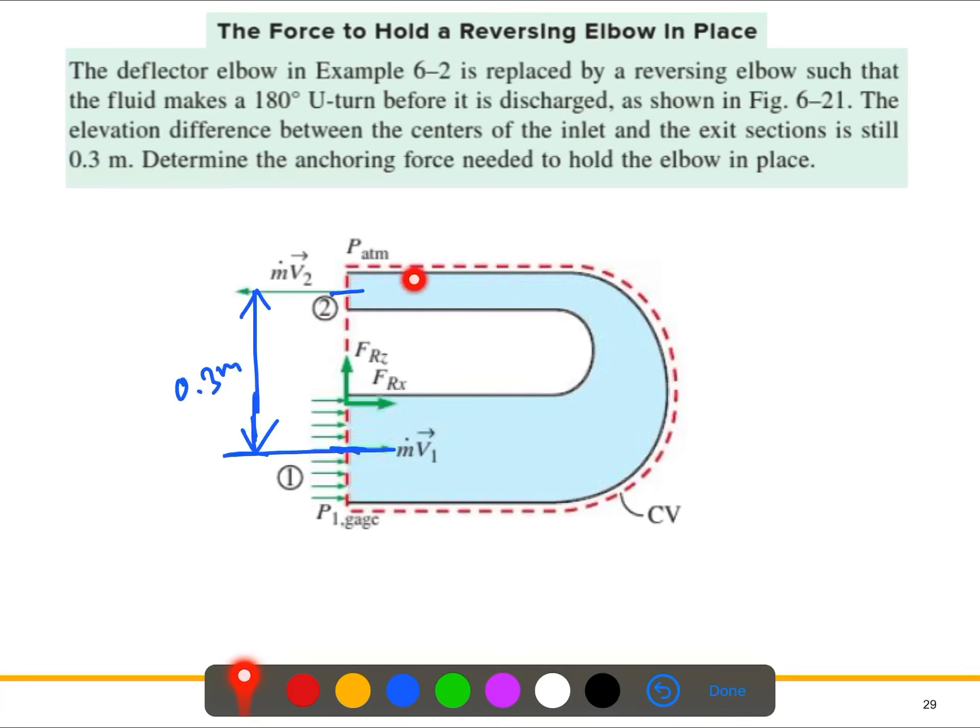This is the horizontal component we will actually calculate. From the previous problem, it was like this at a 30 degree angle. So due to that angle we had the vertical component and the horizontal component. But here it is kind of a 180 degree angle, so that means you can say there is no kind of change of the deflection but it's a reversing elbow.